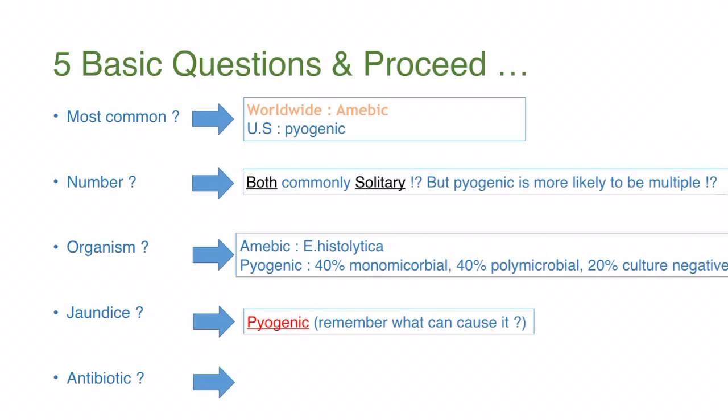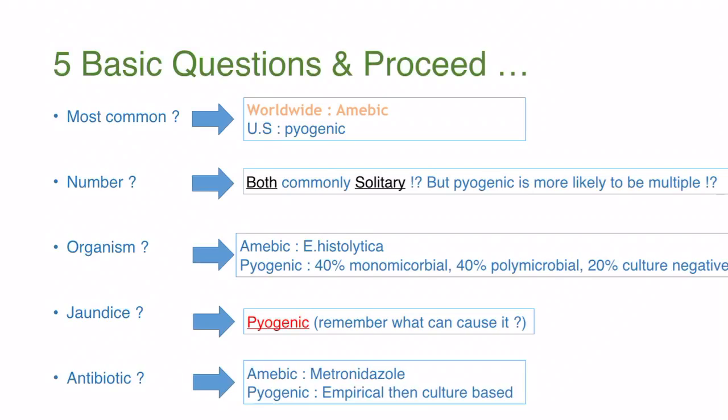Remember, one cause of pyogenic liver abscess is impaired biliary drainage, which logically leads you to think of jaundice. But jaundice is only present in about one third of pyogenic abscess patients. Both amoebic and pyogenic most commonly present with fever, and they may also have abdominal pain. For antibiotics: amoebic uses metronidazole; pyogenic uses empirical then culture-based therapy.